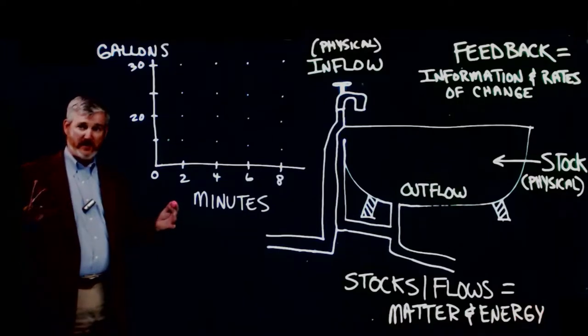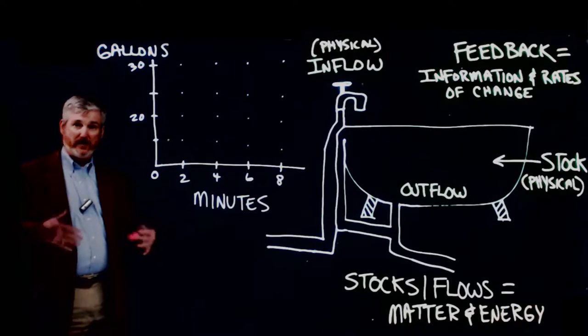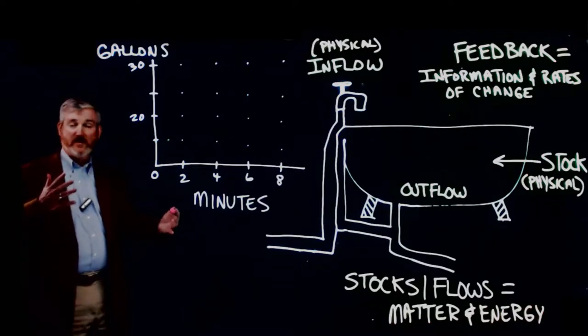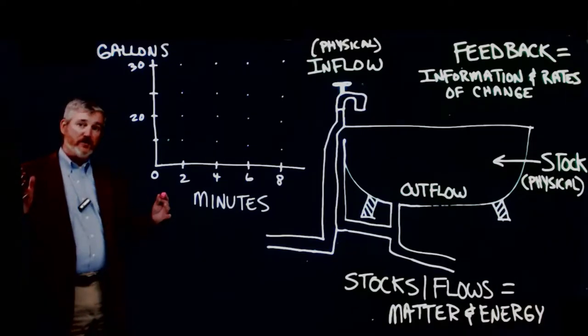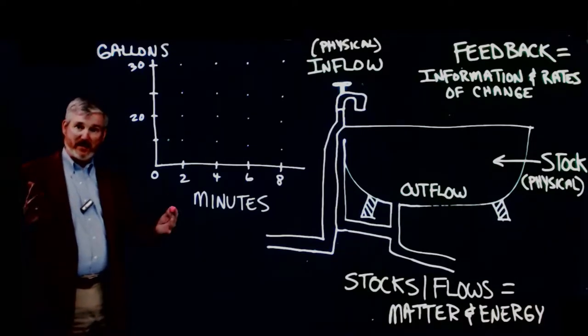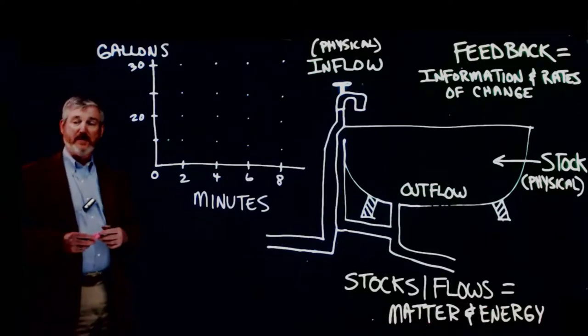And we're going to talk about this in the context of two scenarios. First, a self-regulated scenario, which is the way most Earth systems operate. We don't manage Earth systems until we begin to influence them or mess them up. Most Earth systems operate in a state of dynamic equilibrium. And I'm going to give you an example of that here in just a minute with this bathtub example.